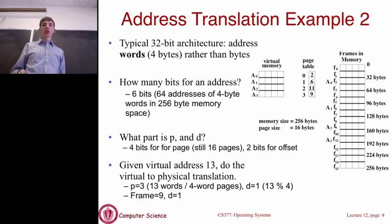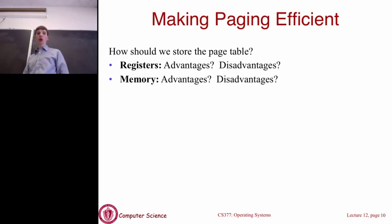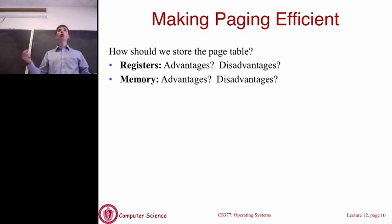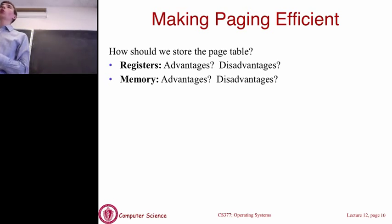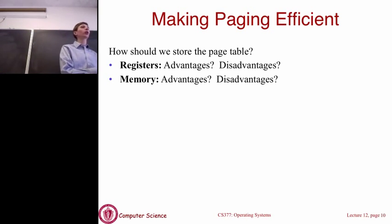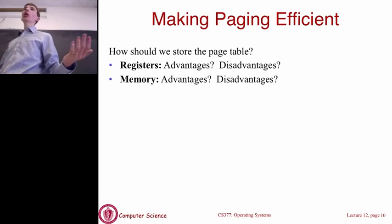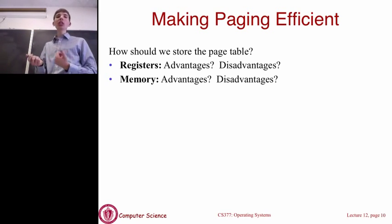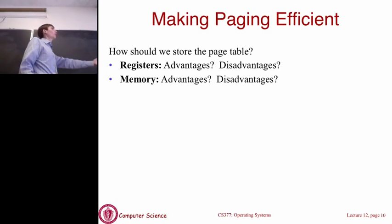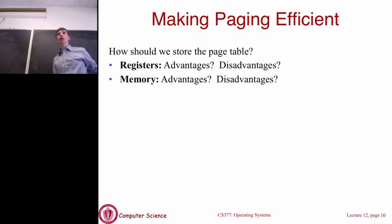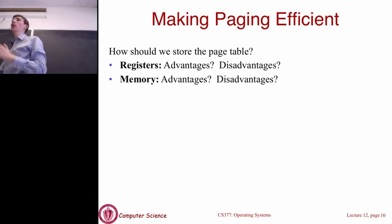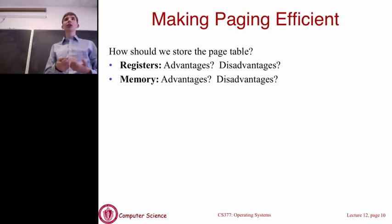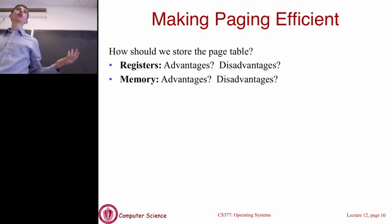Now let's talk about how we can make paging efficient. We need to ask: where should we actually store the page table? Efficiency is a major concern because every single address you use is a virtual address, so you're doing this translation over and over as programs run. One approach is storing the page table in registers — registers are the absolute fastest thing we have, at the top of the memory hierarchy. The advantage is maximum speed; the disadvantage is that you're taking up extra registers, and you have a fixed, pretty small number of registers — maybe a few tens — so the page table size would be extremely restricted.